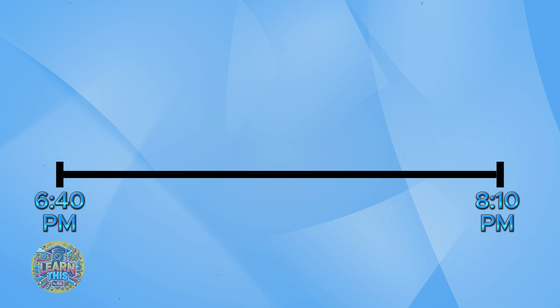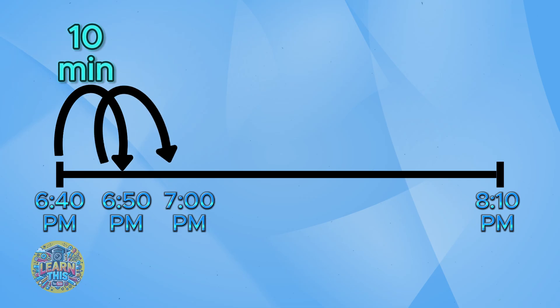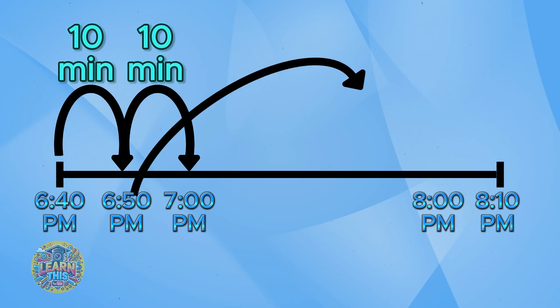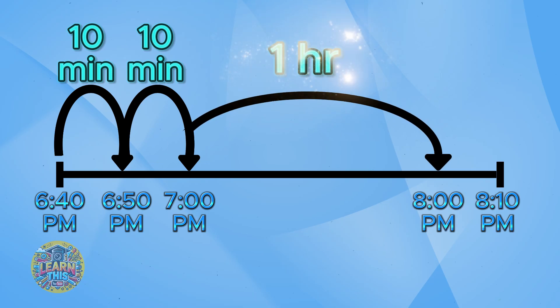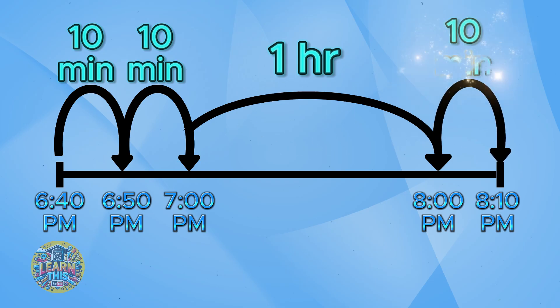Since the minutes end in a zero, we can count by tens to get to the next hour. So let's jump from 6:40 to 6:50 — that's 10 minutes. Then let's jump again by 10 minutes from 6:50 to 7 o'clock. Now that we've made it to the nearest hour, we can easily add another whole hour, which will bring us to 8 o'clock. We are close to the end of the movie. Now we just jump from 8 o'clock to 8:10, which is 10 minutes.